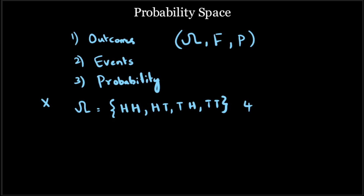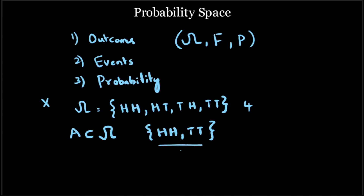Now how do you define an event? An event A is nothing but a subset of this particular set of outcomes. For example, if you define an event as the two coin tosses giving the same outcome — that is HH or TT — this is a specific event and a subset of omega. Another example of an event is the two coin tosses giving different outcomes, say HT or TH, which is again a subset of omega.